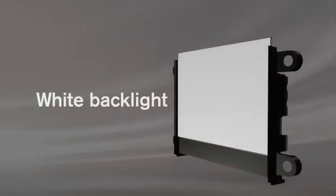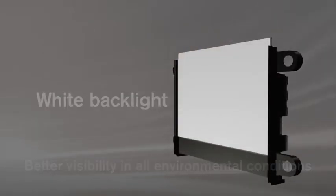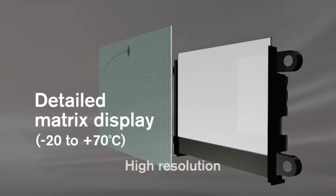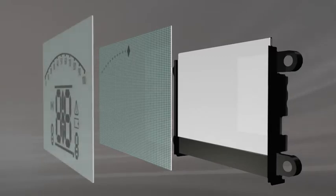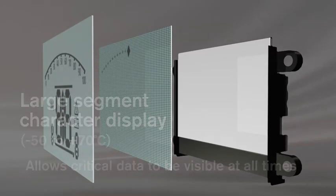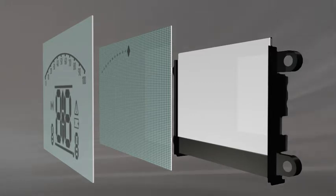The large clear display provides a window into the operation of the plant and shows real-time asset management data at the actuator. The advanced display allows large segment character position displays down to minus 50 degrees centigrade, while the matrix display provides detailed setting, status and diagnostic multilingual screens.